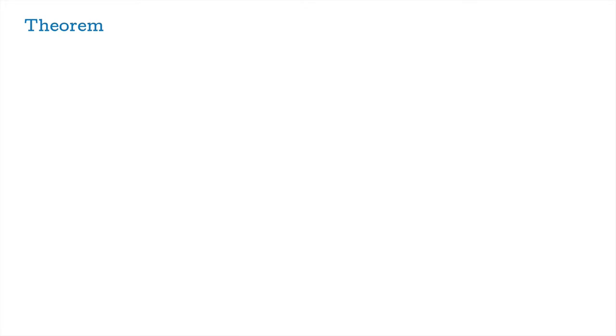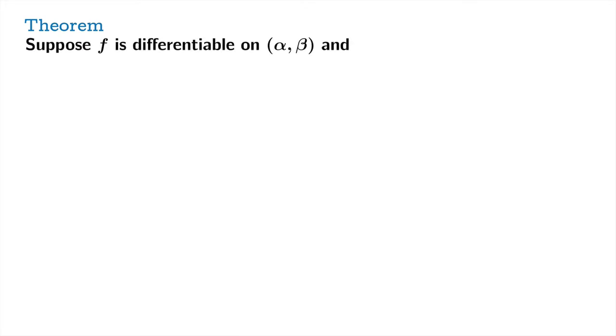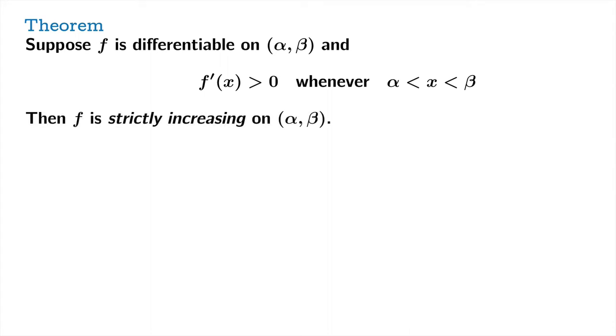Here's the basic theorem that we're going to riff on for the rest of the video. We're going to extend and generalize this theorem, but this is pretty much the heart of it right here. Suppose f is differentiable on an open interval from alpha to beta, and f prime of x is greater than 0 whenever x is between alpha and beta — so the value of the derivative is positive everywhere inside the open interval. Then f is strictly increasing on that open interval.